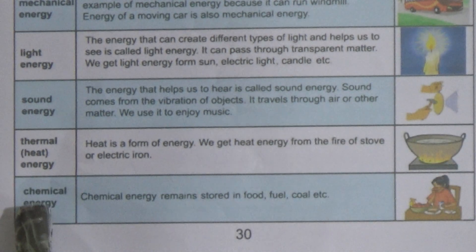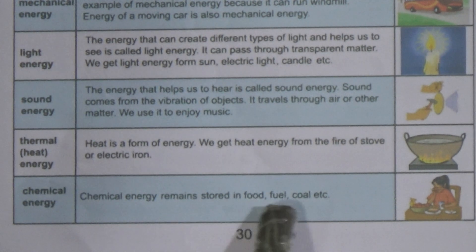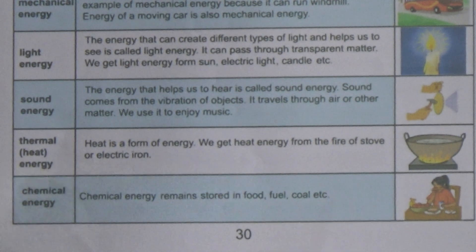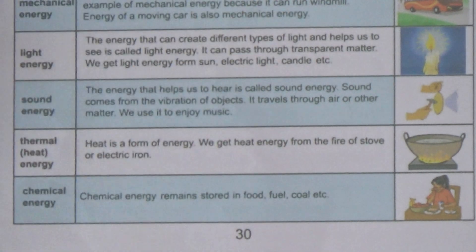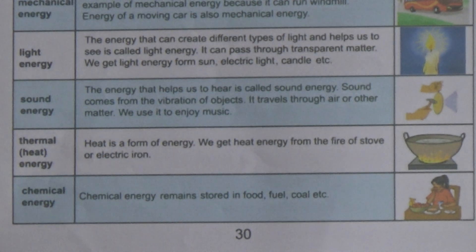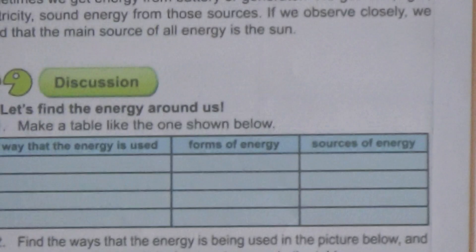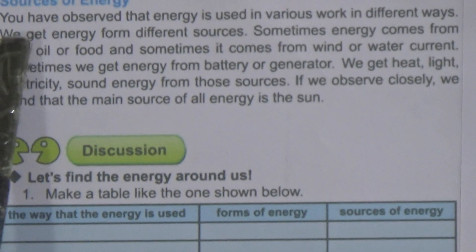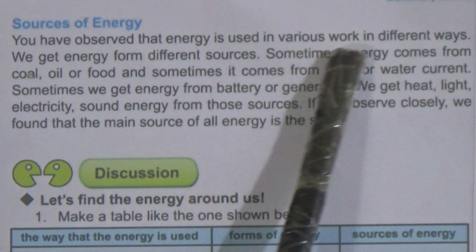Now come to the last form — chemical energy. Chemical energy remains stored in food, fuel, or coal. Dear students, this chart you have to learn. Now let's come to the sources of energy.